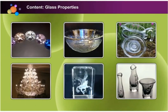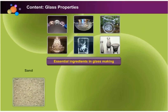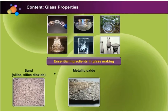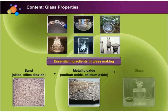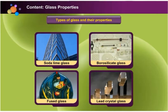Glass is an amorphous solid or non-crystalline solid. It is one of the most versatile substances because it can be used in many applications and in a wide variety of forms. The essential ingredients used in glass making are sand, silica or silicon dioxide, and metallic oxide such as calcium oxide or sodium oxide. The mixture is strongly heated to produce silicate salts, which is glass. Different types of glass can be made from different compositions of sand or silica and other metallic oxides.